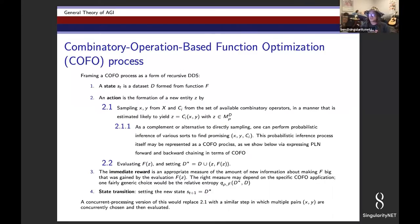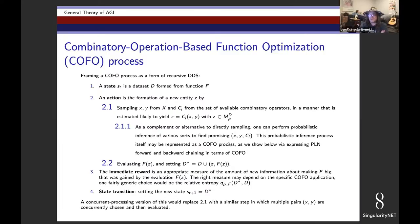The intricacy is in how you form a new combination. You can sample the available entities and combinatory operators from some probabilistic sampling over possible combinations from existing knowledge, or you could do reasoning of some sort to guess which combination to try. Then you ask: how does this reasoning process work? The reasoning process may itself be a discrete decision system — it may itself be another COFO process — and then you have a recursive DDS in the form of a recursive COFO process.